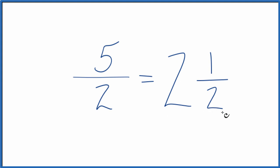So 2 and 1 half, that's the mixed number for the fraction 5 halves. So we didn't really simplify it so much as change it to a mixed number here.